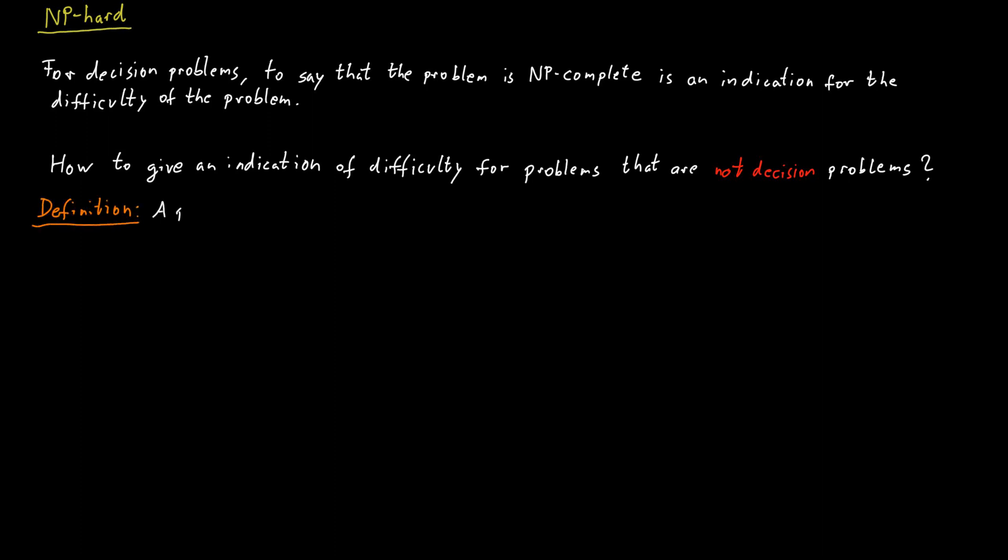A problem A is NP-hard if every problem in NP reduces to it in polynomial time. It is important that for this reduction we use Cook-reductions, NP-reductions rather than Karp-reductions. This is because Karp-reductions only tell us something about the relationship between decision problems. But now A does not necessarily have to be a decision problem anymore. So really Cook-reductions is what we need here.